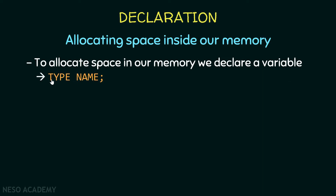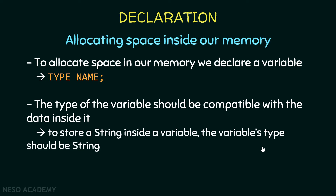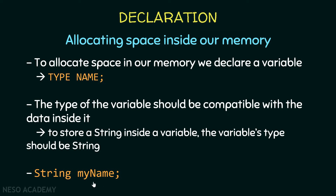To declare a variable, we put the type of the variable, then leave a space, then put the name of the variable — the name is optional and can be anything. As you can see, we have a semicolon at the end, so declaring a variable is a statement in Java. The type of the variable should be compatible with the data inside it. For example, to store a string inside a variable, the variable's type should also be string. Here I'm declaring a variable called myName of type String, using camel case convention. So myName is a variable that can store a string, and we end it with a semicolon.